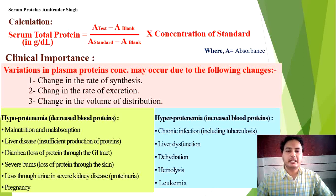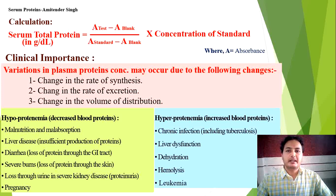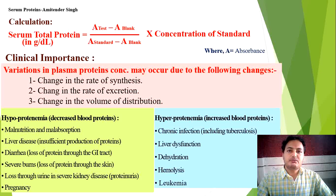What is the clinical importance? Why do we estimate total serum protein? The normal serum protein or plasma protein level varies depending on various factors — change in the rate of synthesis, change in the rate of excretion, or change in the volume of distribution. To predict and monitor these changes, we perform this estimation. Hypoproteinemia is a clinical condition in which the total serum protein value falls below the normal value, and hyperproteinemia is when total serum protein increases above the normal value.